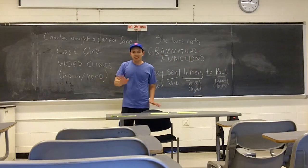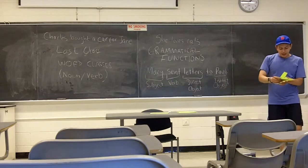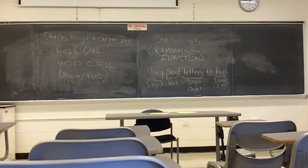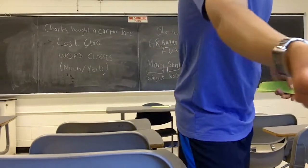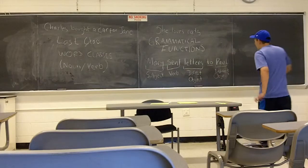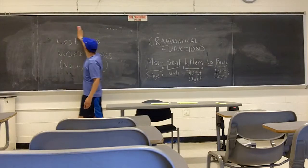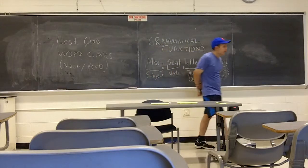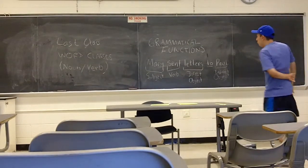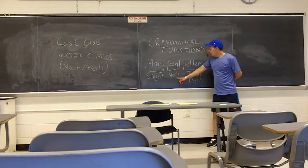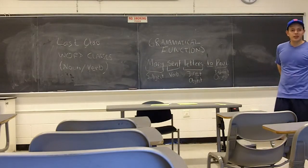All right. So what I am going to do now is give you sentences and you will underline the subject, the verb, the direct object, and the indirect object if there are any. Just underline and say when you're finished.